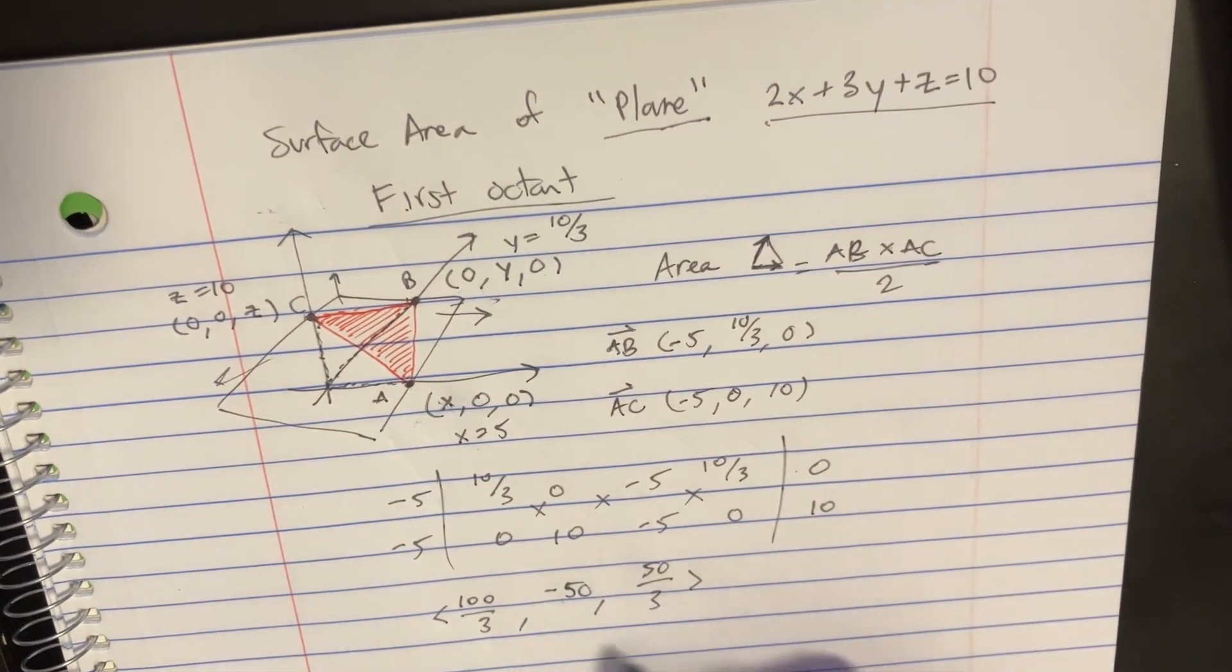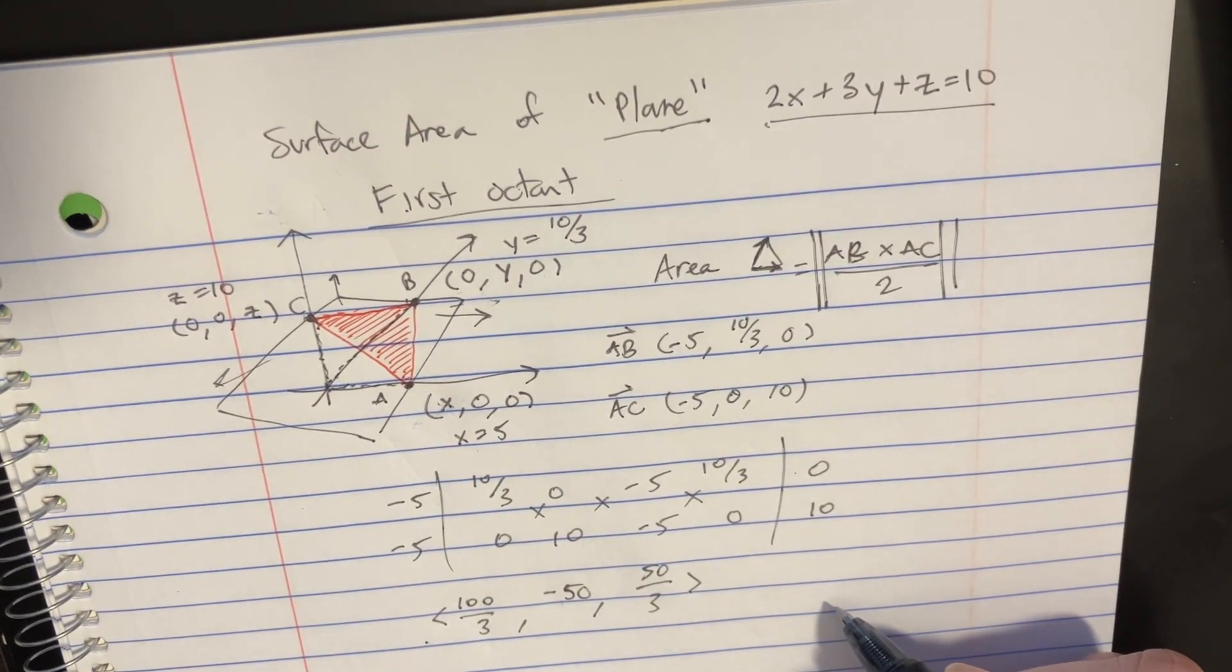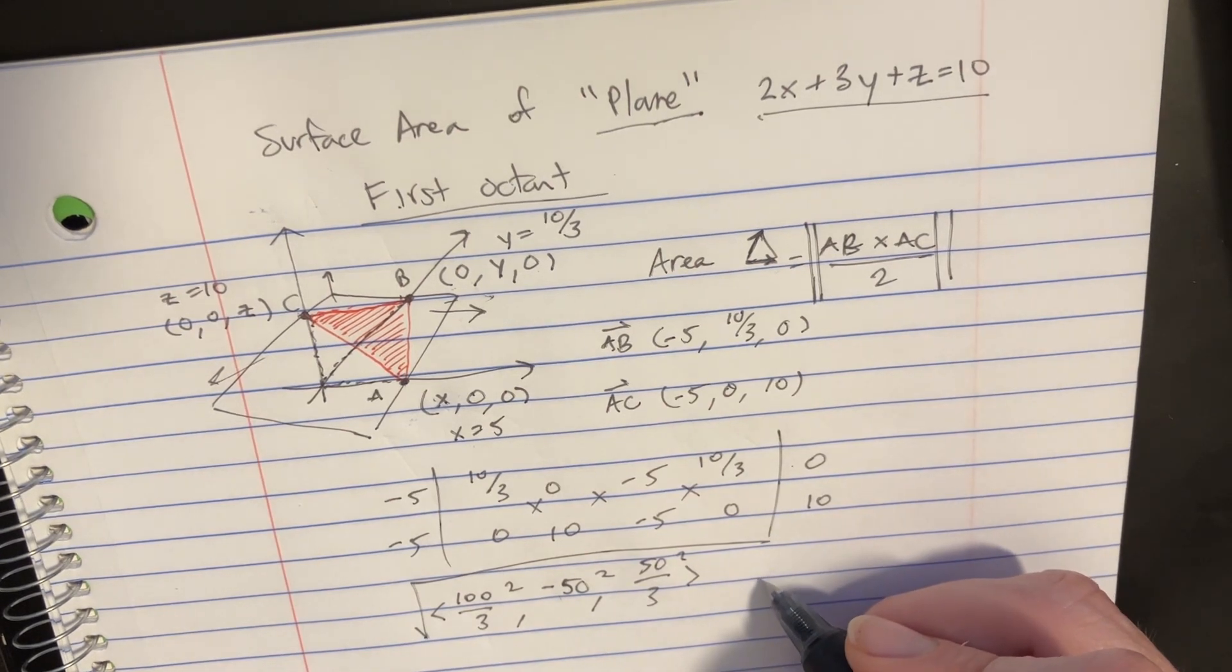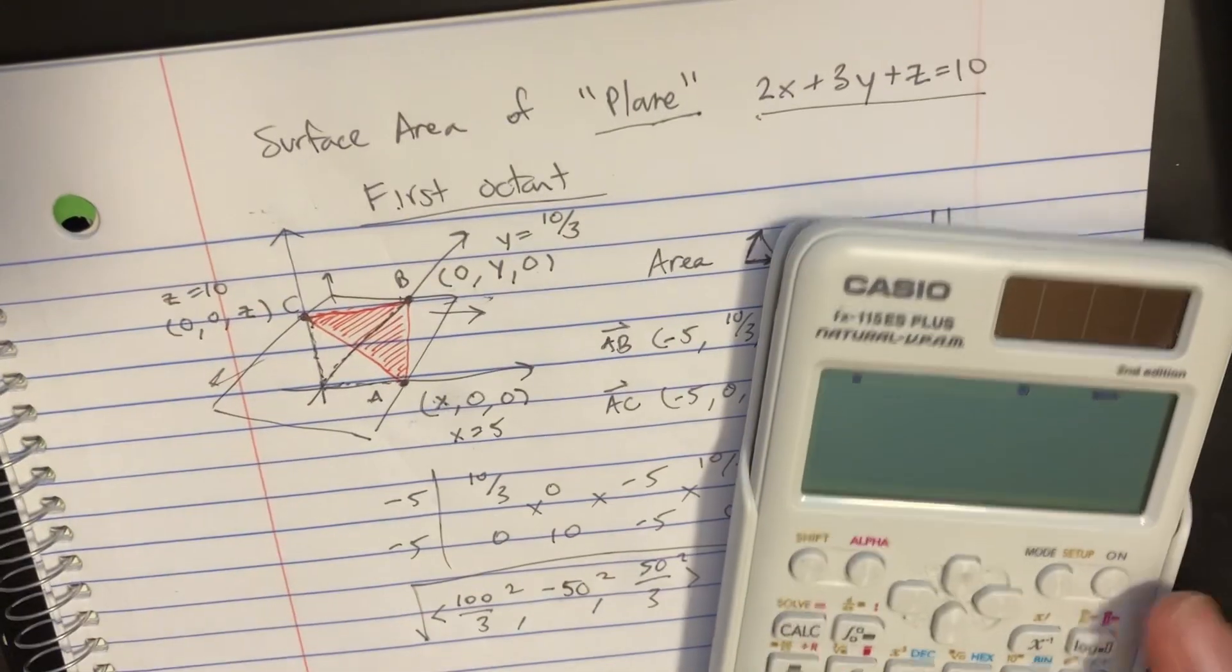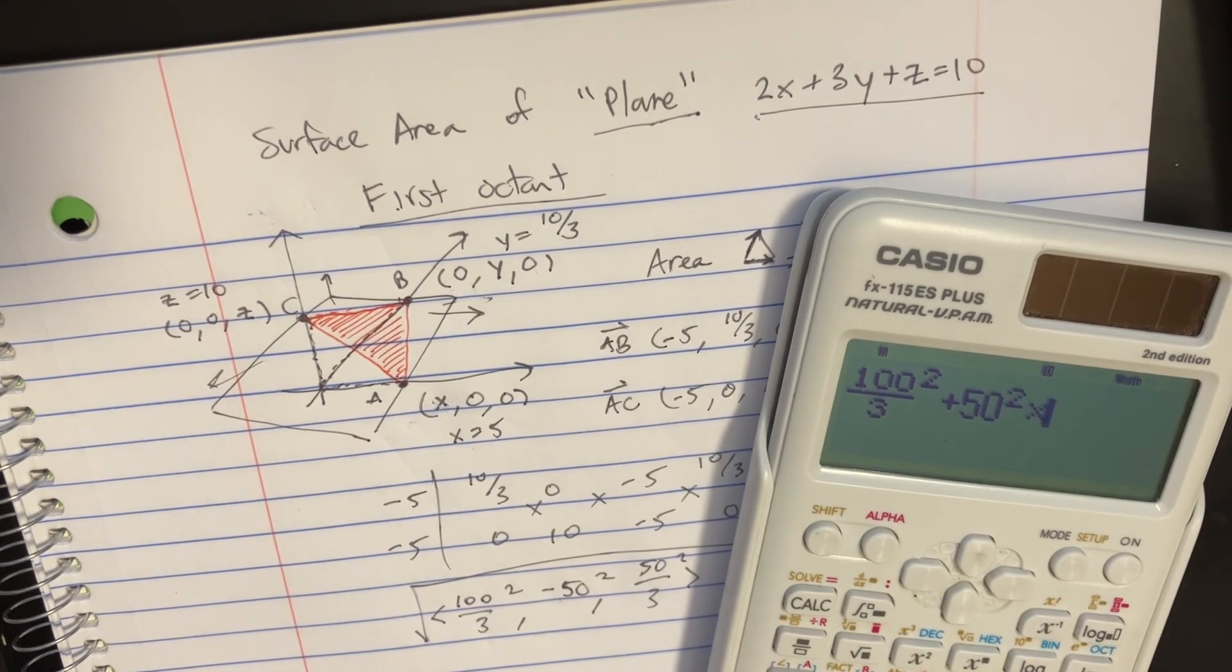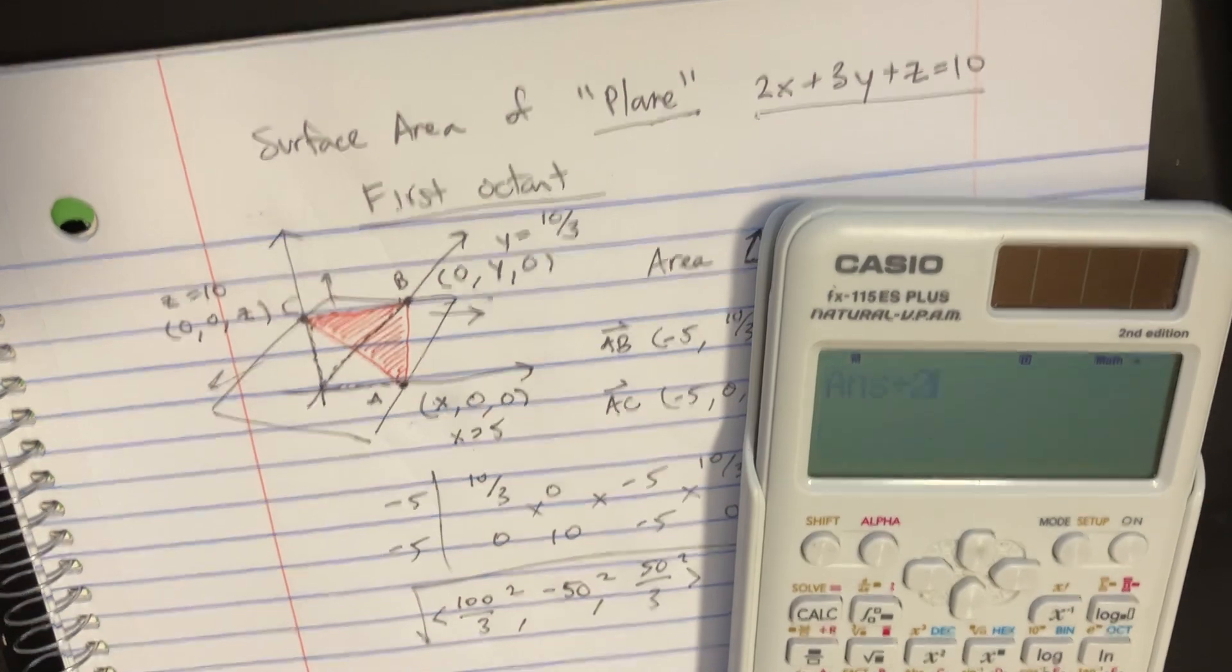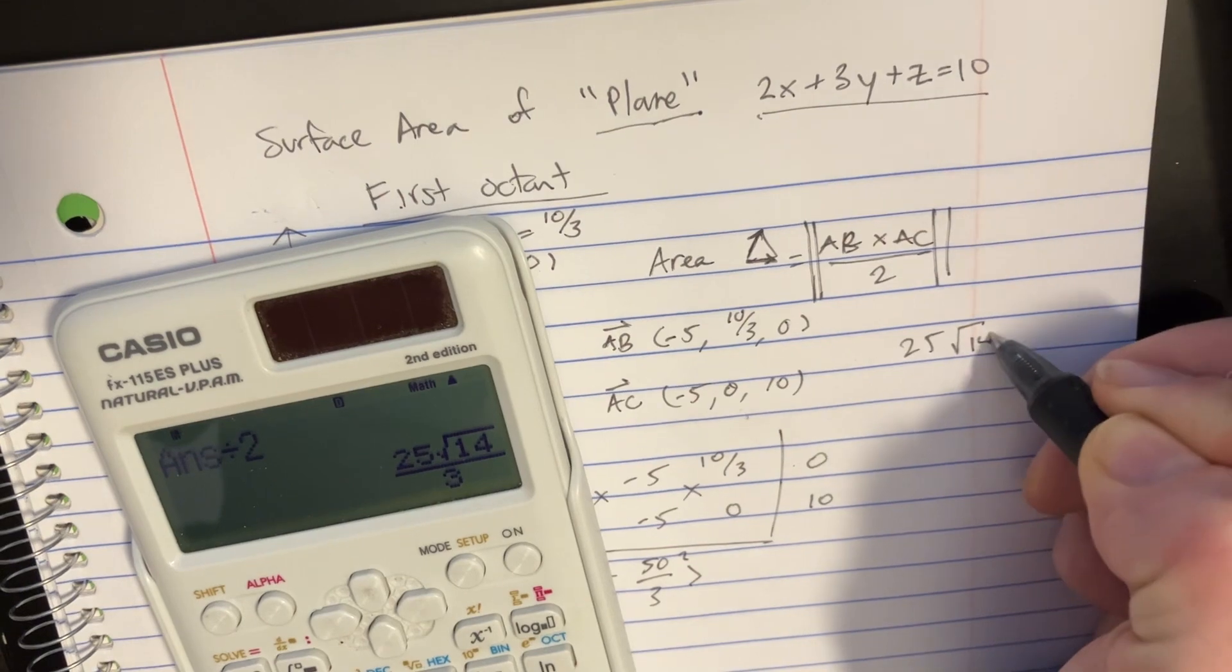What we've got to do is find the magnitude of this, and then we can divide that by 2. To do that, we're just going to square everything and take the square root. If we plug that into the calculator, we'll go 100 over 3 squared plus 50 squared plus 50 over 3 squared, then we'll square root that and divide that by 2. Now we've got our answer here, so it's 25 times the square root of 14 divided by 3.